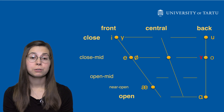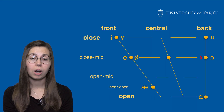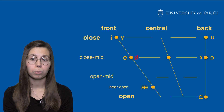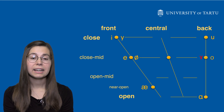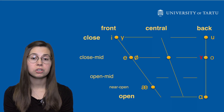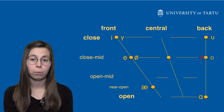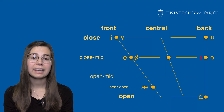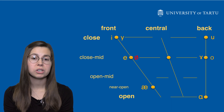õ also differs from ü in that õ is a back vowel while ü is a front vowel. In the case of õ, the tongue is positioned towards the back of the mouth, and in the case of ü, the tongue is positioned more forward.